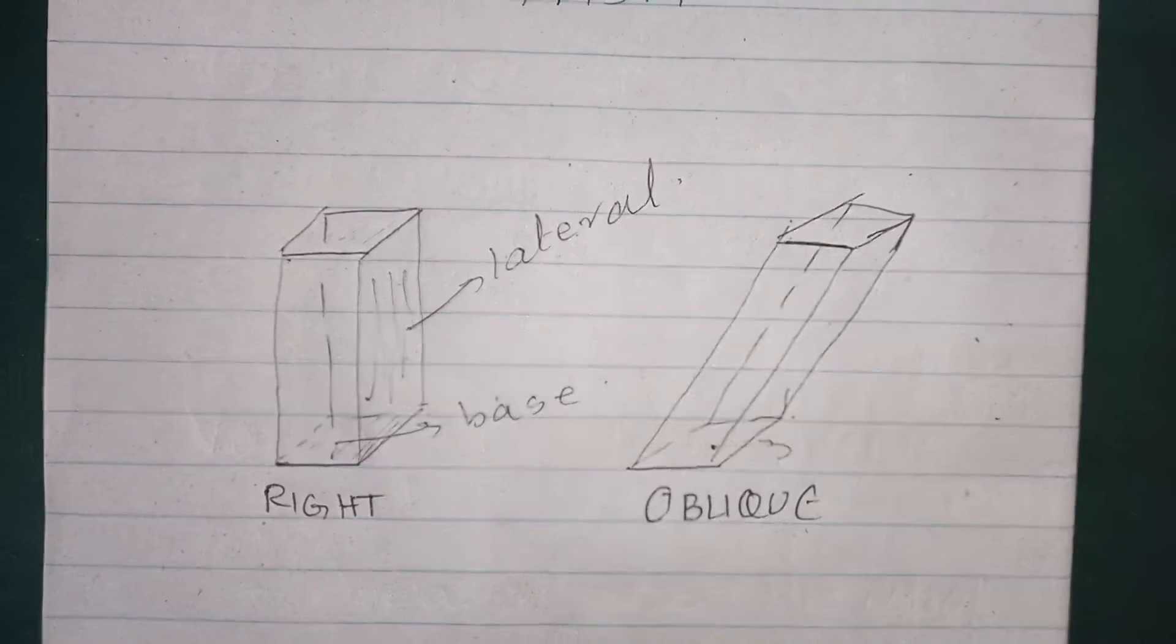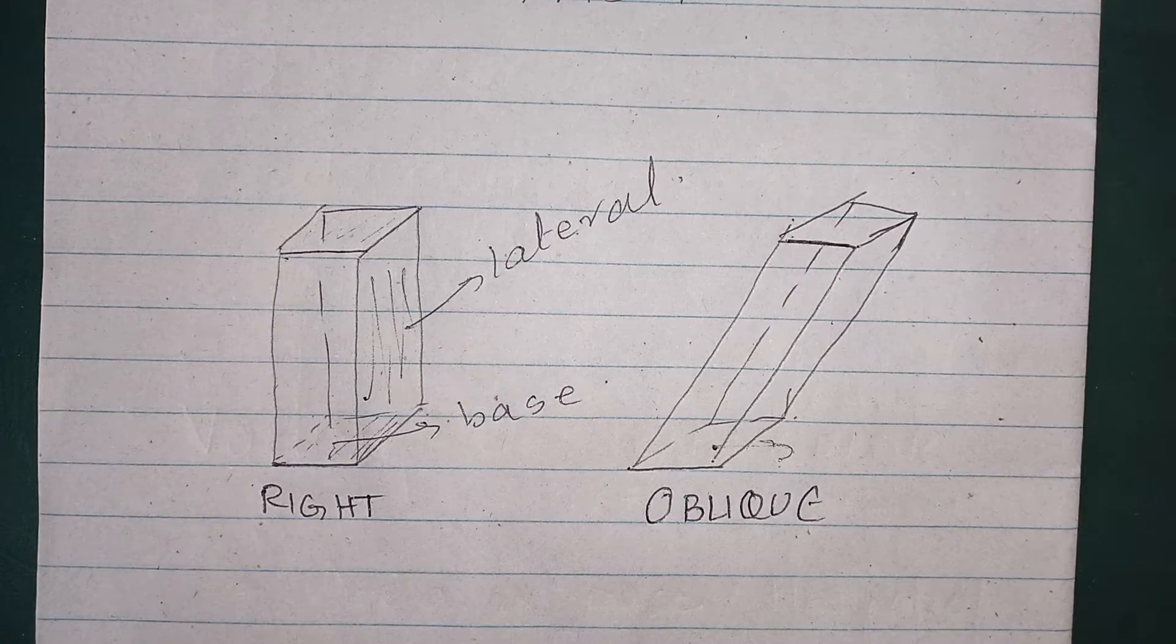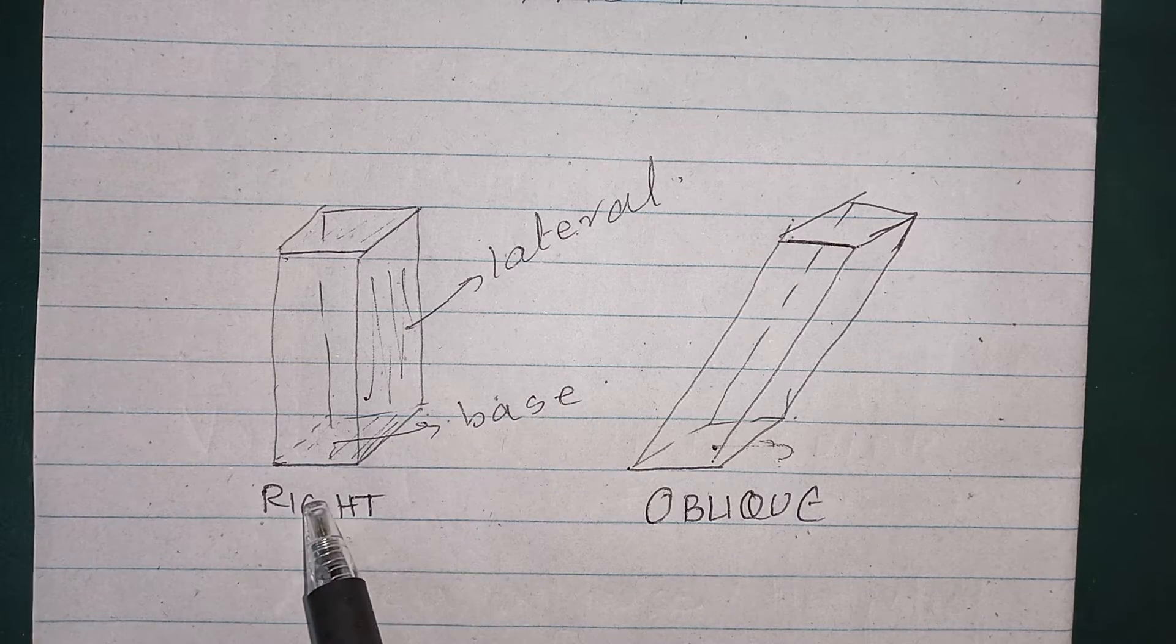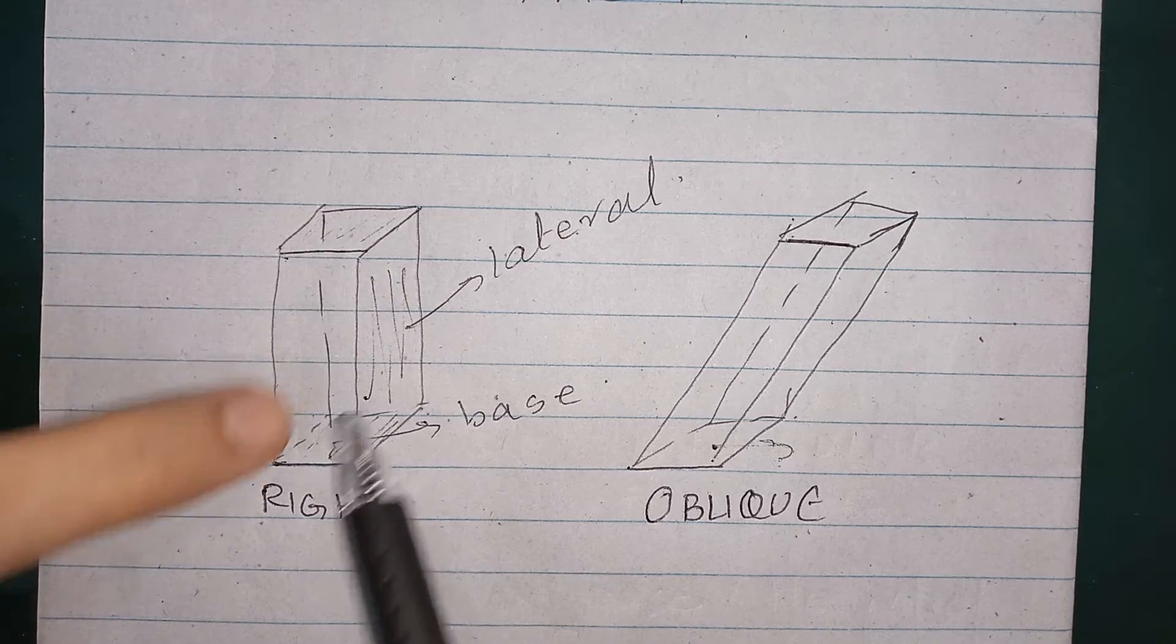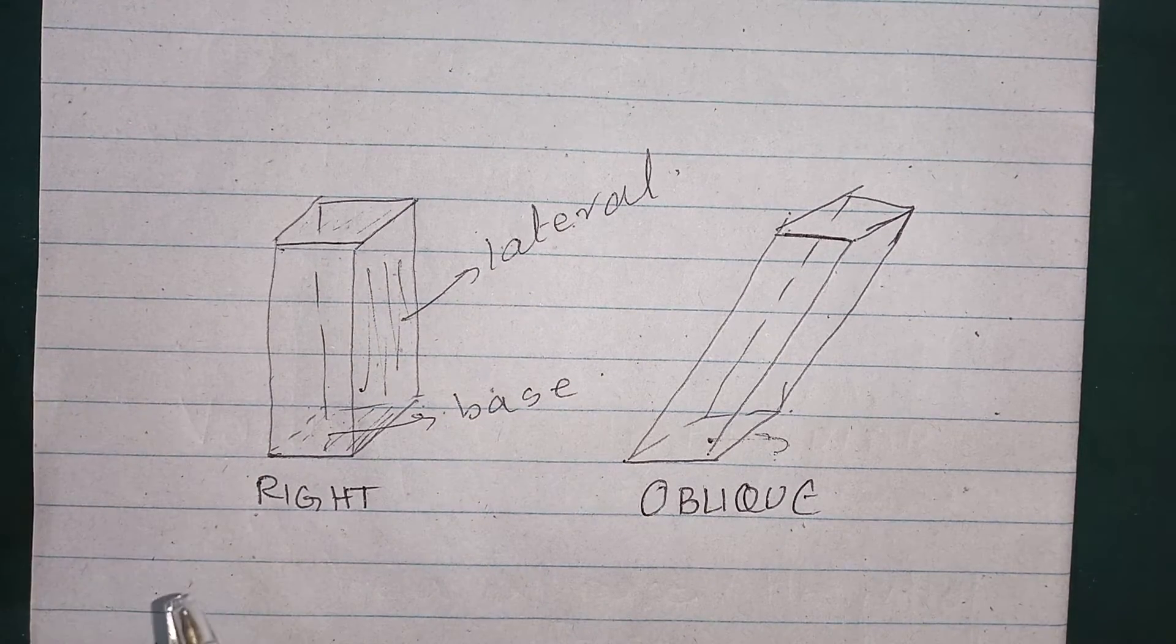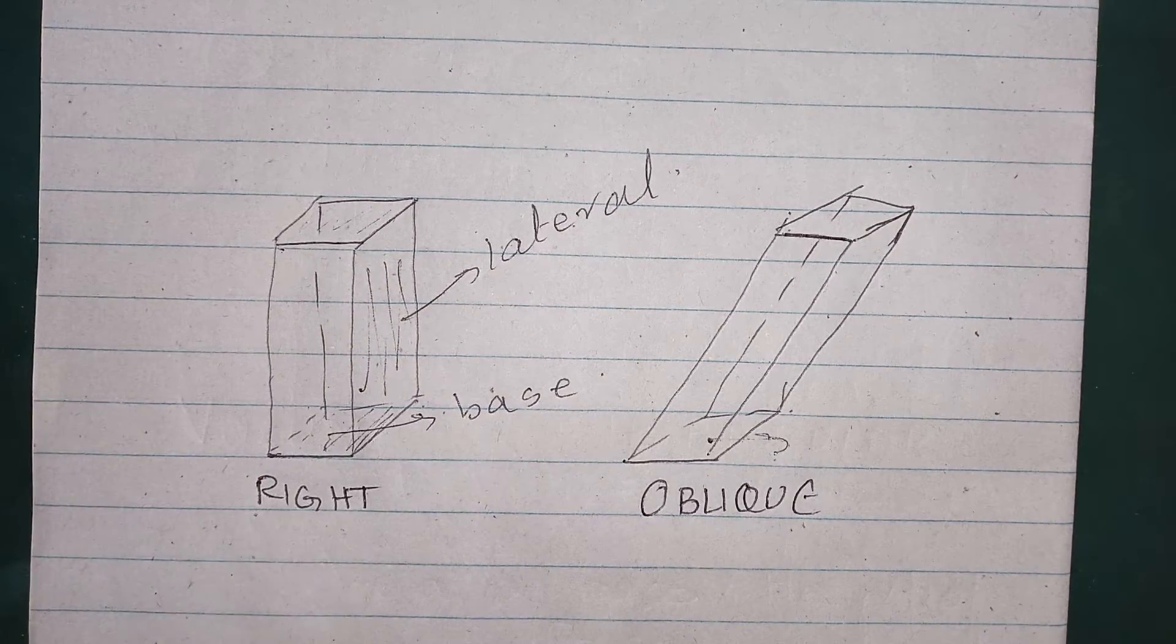For example, if we take this figure as an example, it is a rectangular prism where the base face and the lateral face are at right angle, are at 90 degree angle.